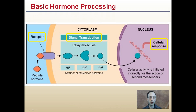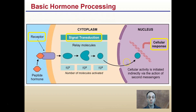These relay molecules can then impact a cellular response by affecting DNA expression. Cell activity is initiated indirectly via the action of secondary messengers. Notice this small round molecule is able to get to the pore of the nucleus and adjust the cellular response by adjusting gene regulation.